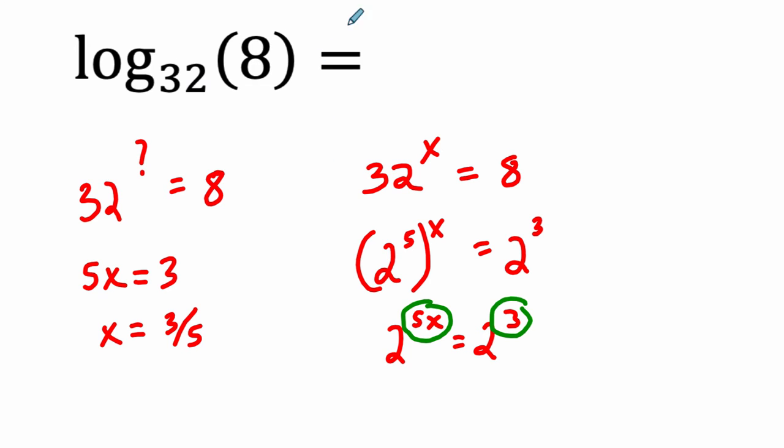Now I would quickly test this out, because this is not maybe so intuitive, to see that this actually works. So I rewrite this. I'm just going to put this little double arrow, which means if and only if. So this is true, if and only if, 32 to the 3 fifths power equals 8. So we can test that.